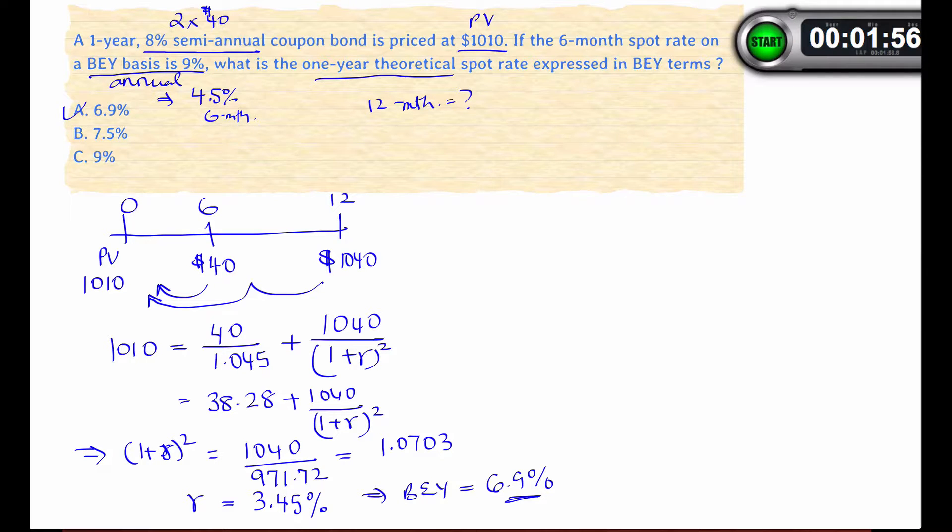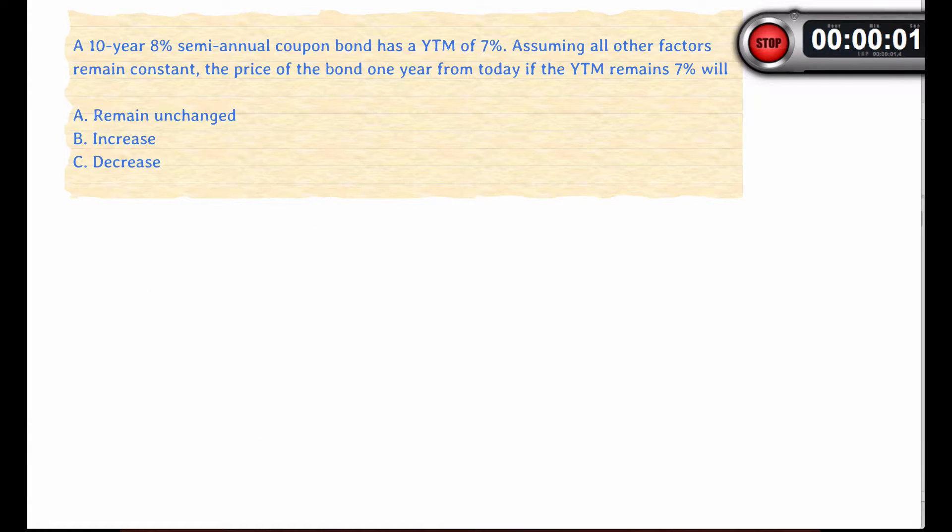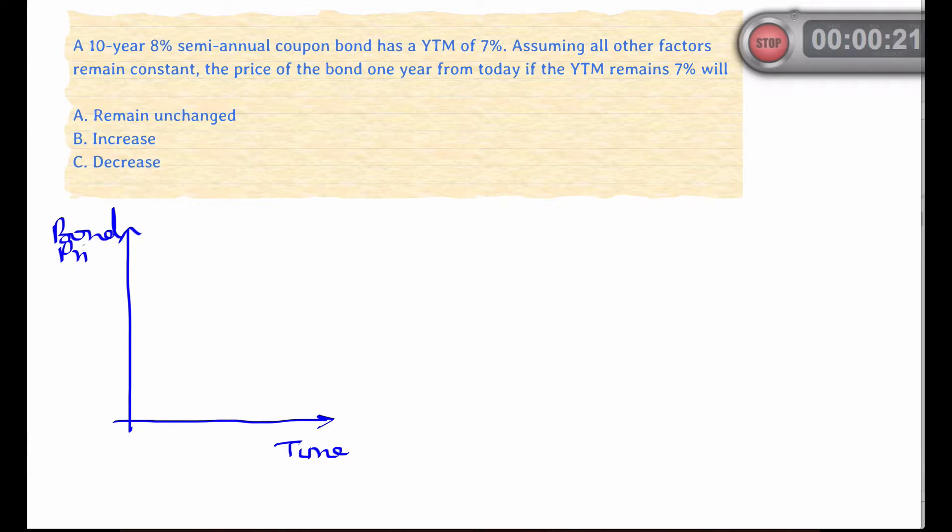Let's look at another question. Here we have a 10-year issue which has an 8% coupon, has a yield to maturity of 7%, and we're being asked what do you expect the price of this bond to be in a year. Now one approach is to solve this problem quantitatively, however a quicker way is to recall that regardless of the YTM, the price of a bond will converge to its par value as maturity approaches. This convergence to par value at maturity is known as constant yield price trajectory.